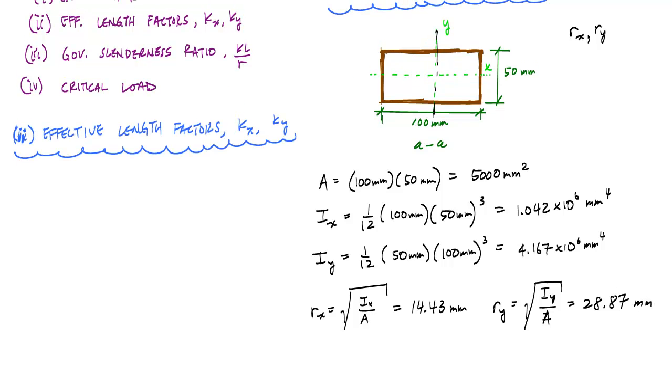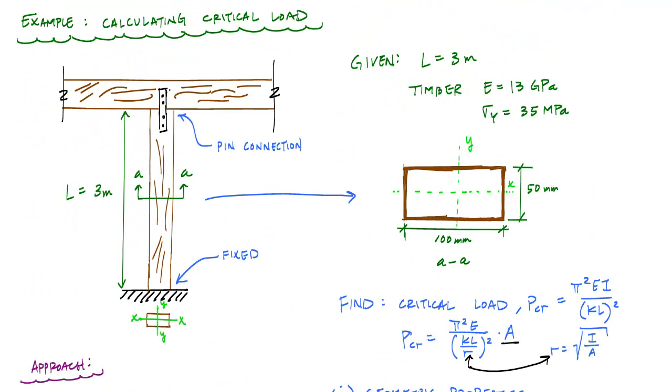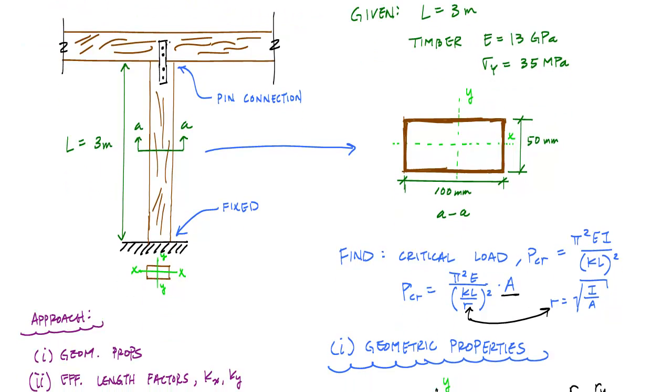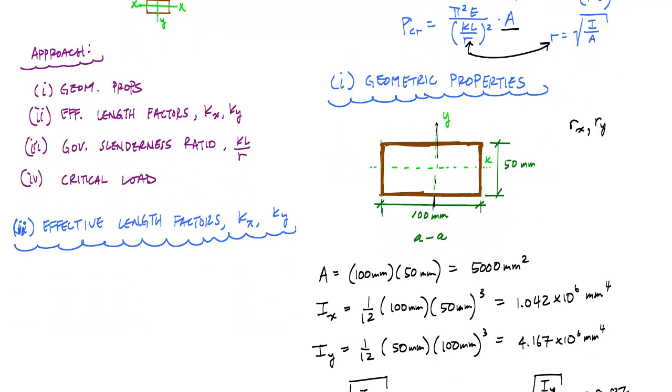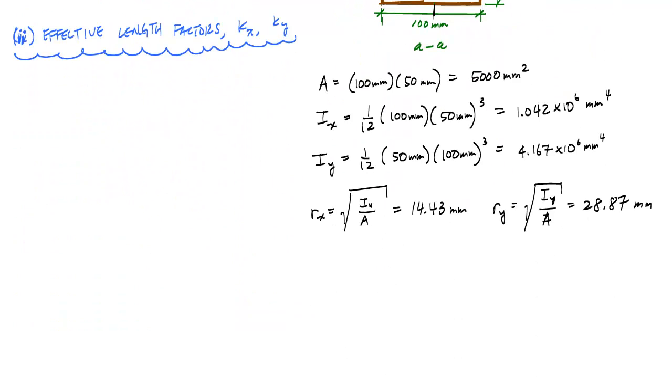Now the next thing we want to do is determine the effective length factors, which depends on the boundary conditions. And what we said here is that the top here is pinned about the x and the y, and this bottom is fixed about the x and y. So what we do is take this structure, this real-life structure, and idealize it or model it as follows.